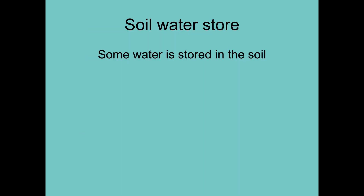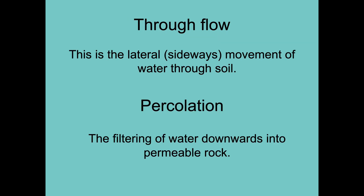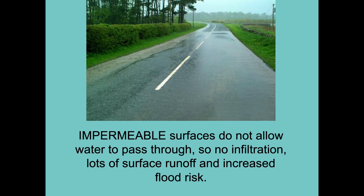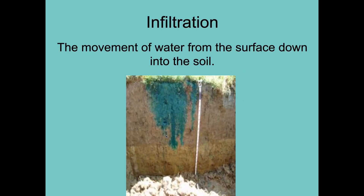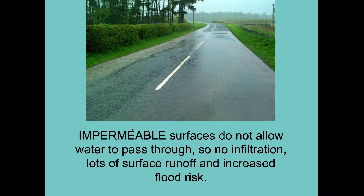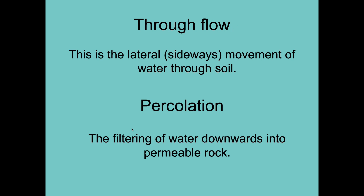The soil moisture store is pretty obvious. Through flow is a process — it's the sideways movement of water. Infiltration moves water vertically downwards; through flow moves it horizontally through the soil. Percolation is exactly like infiltration but into the rock rather than the soil — it's entirely the same idea, controlled by gravity, the water soaks downwards. That is a process.